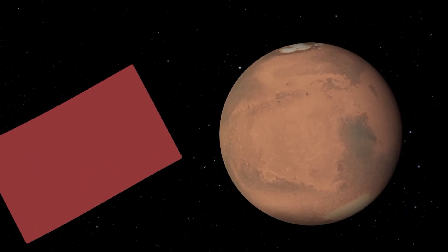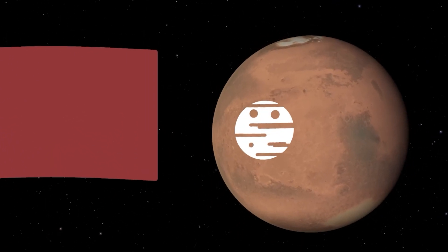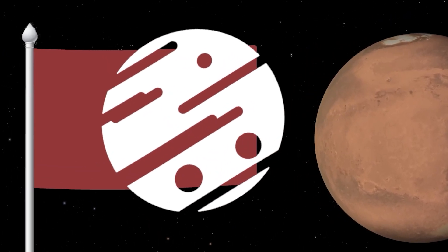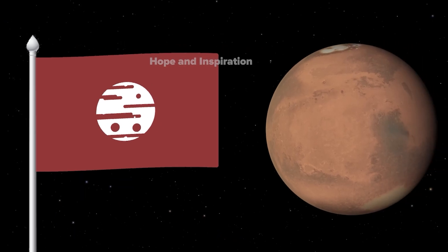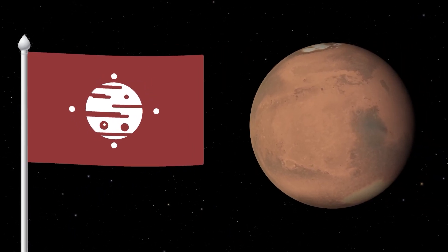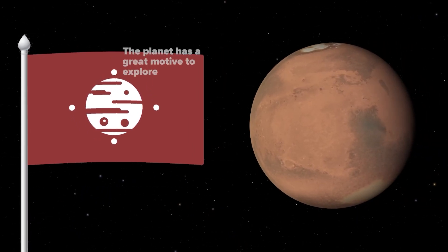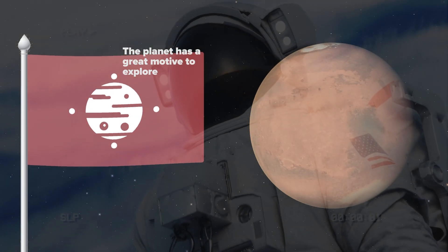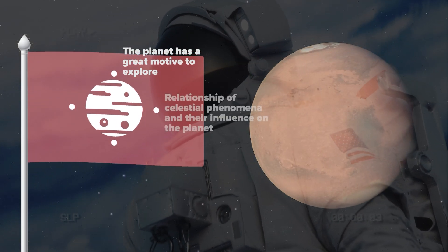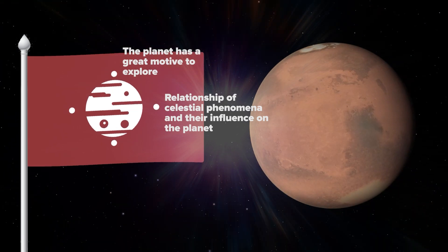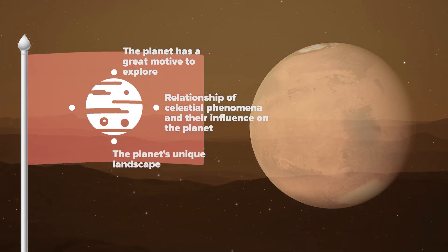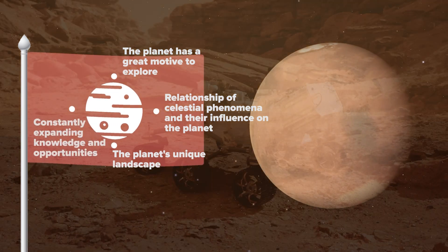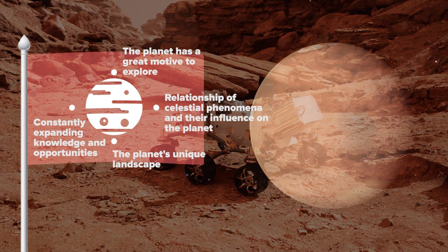The background will be red, symbolizing the color of the planet. In the center of the flag is a white circle symbolizing hope and inspiration. And around the white circle are four smaller circles, each with its own meaning. Circle 1 – the planet has a great drive to explore. Circle 2 – relationship of celestial phenomena and their influence on the planet. The third circle – the planet's unique landscape. The fourth circle – constantly expanding knowledge and opportunities.